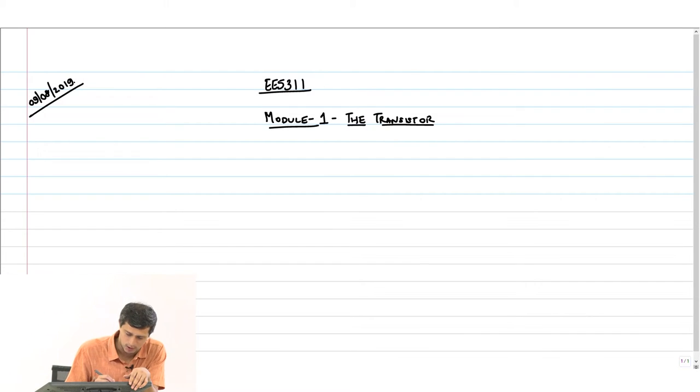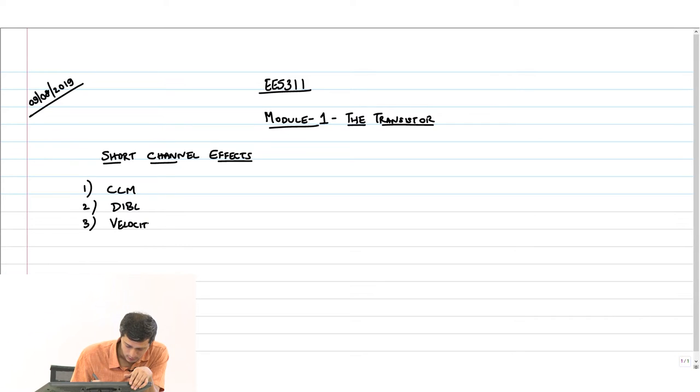So, let us continue with our discussion on short channel effects. We basically did channel length modulation, then we did DIBL, then we did velocity saturation. I believe we stopped with this last class. We modified the equation and got to the level 1 SPICE model, we derived that and got all the technology parameters out, the 5 parameters.